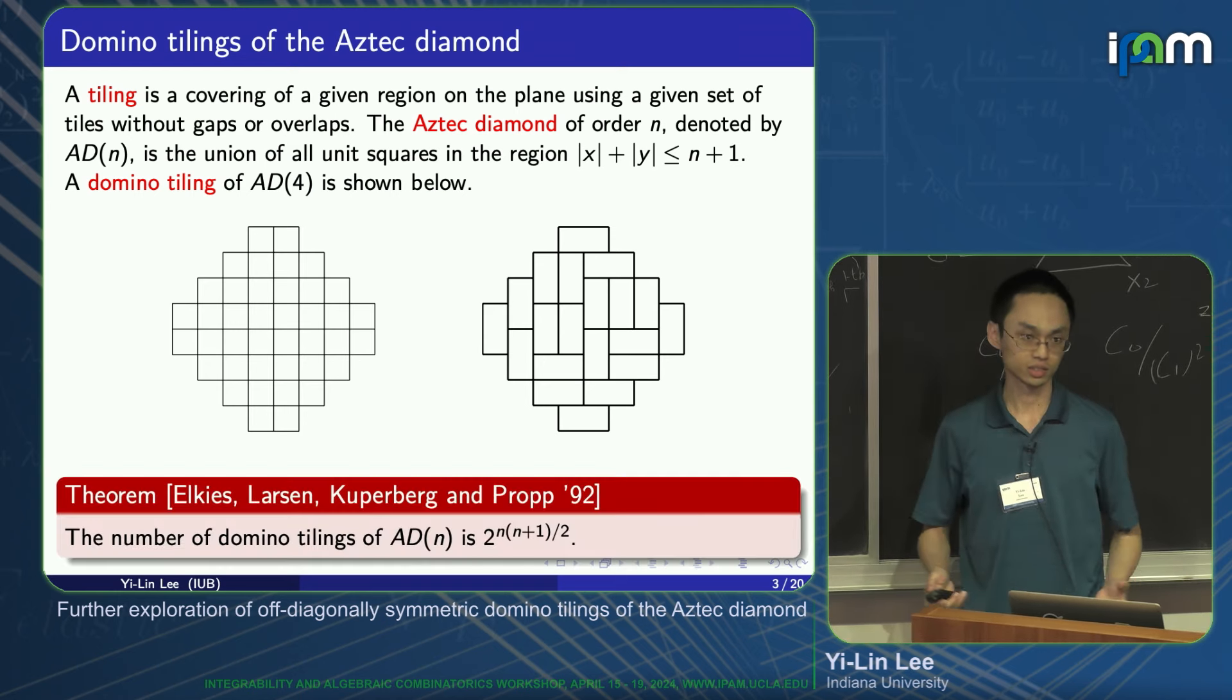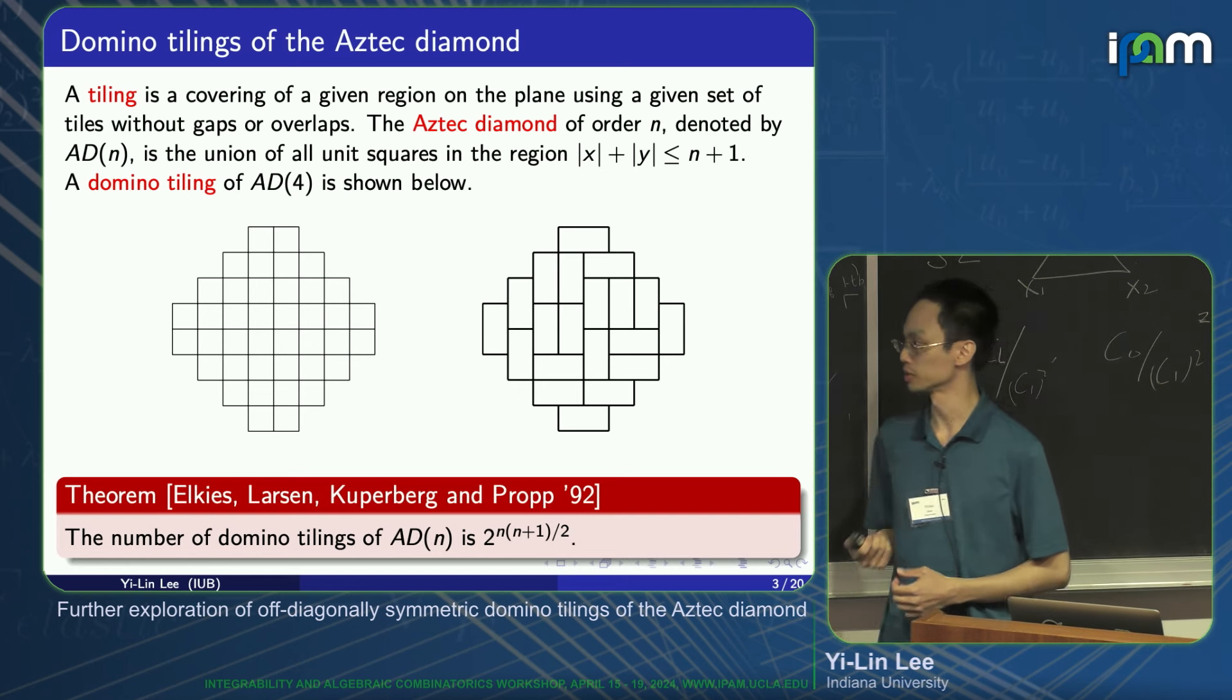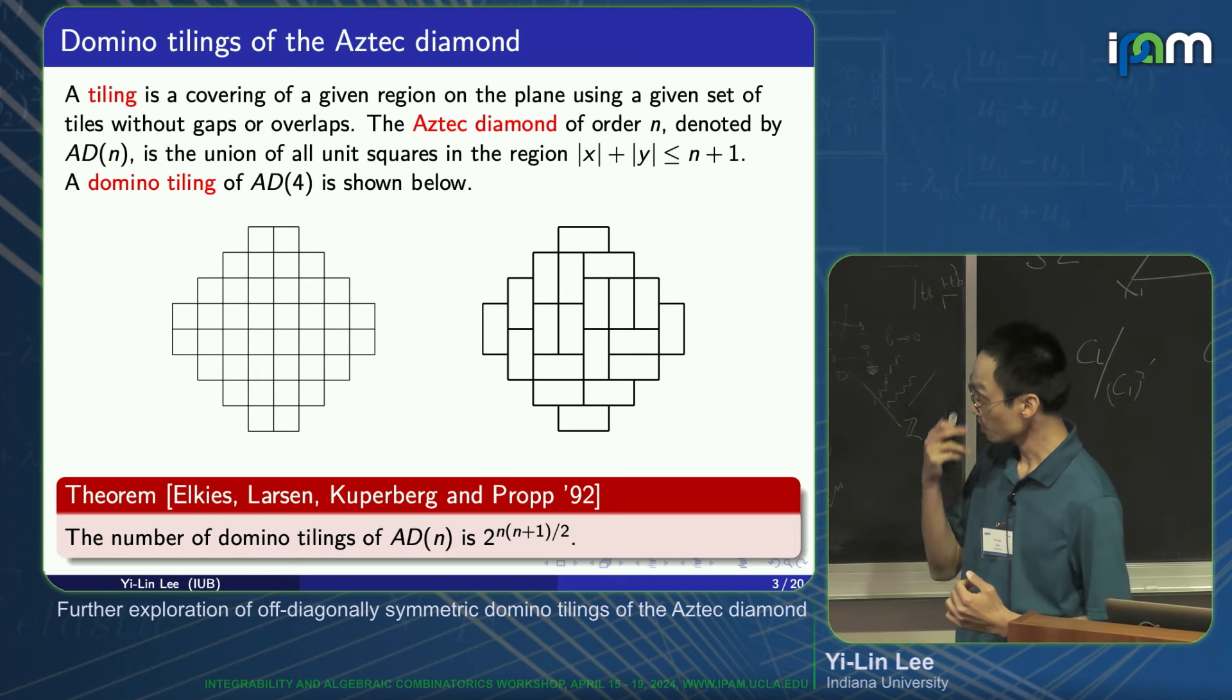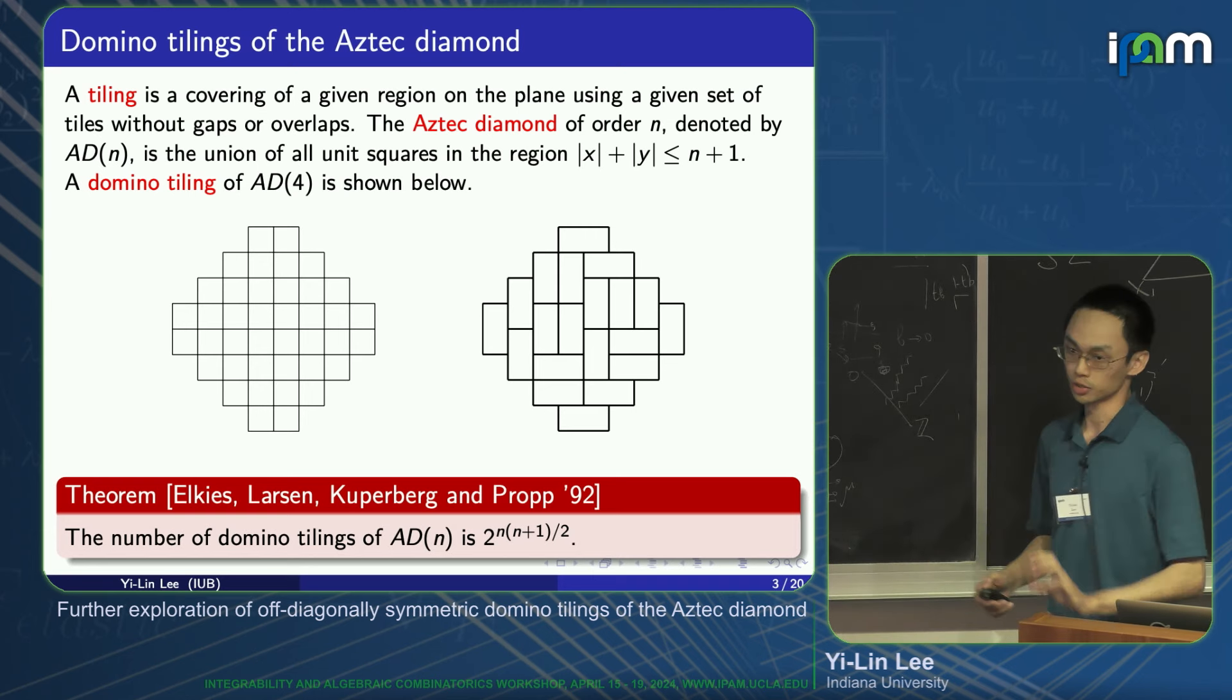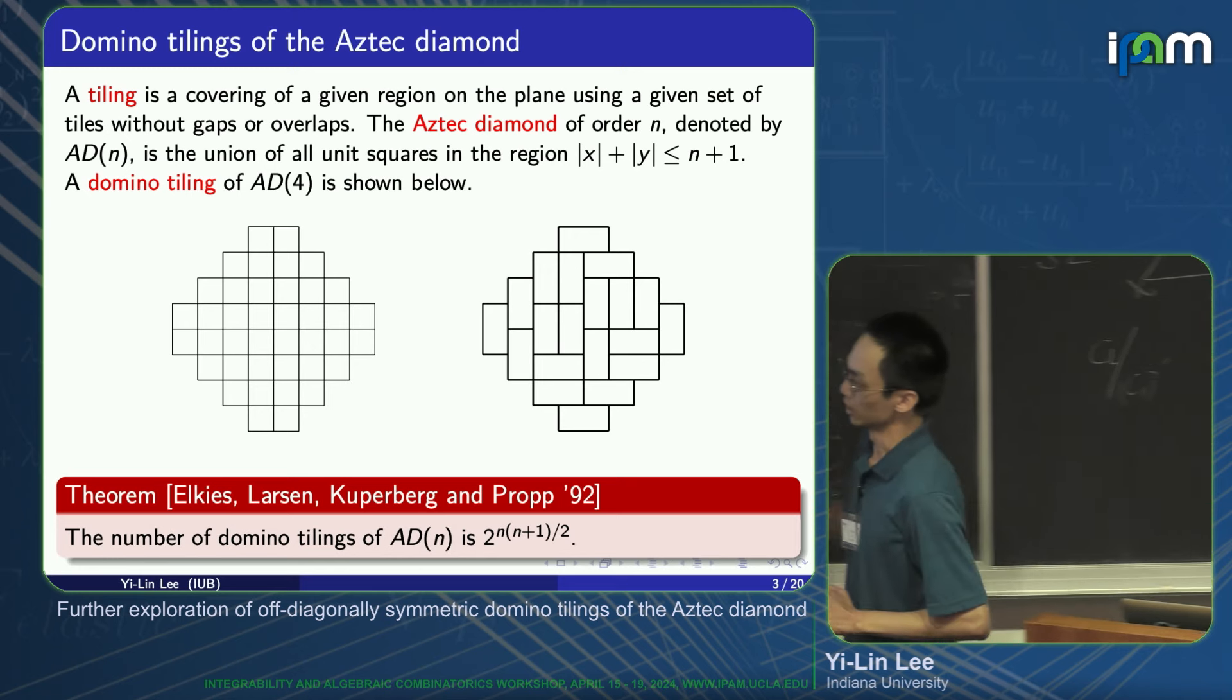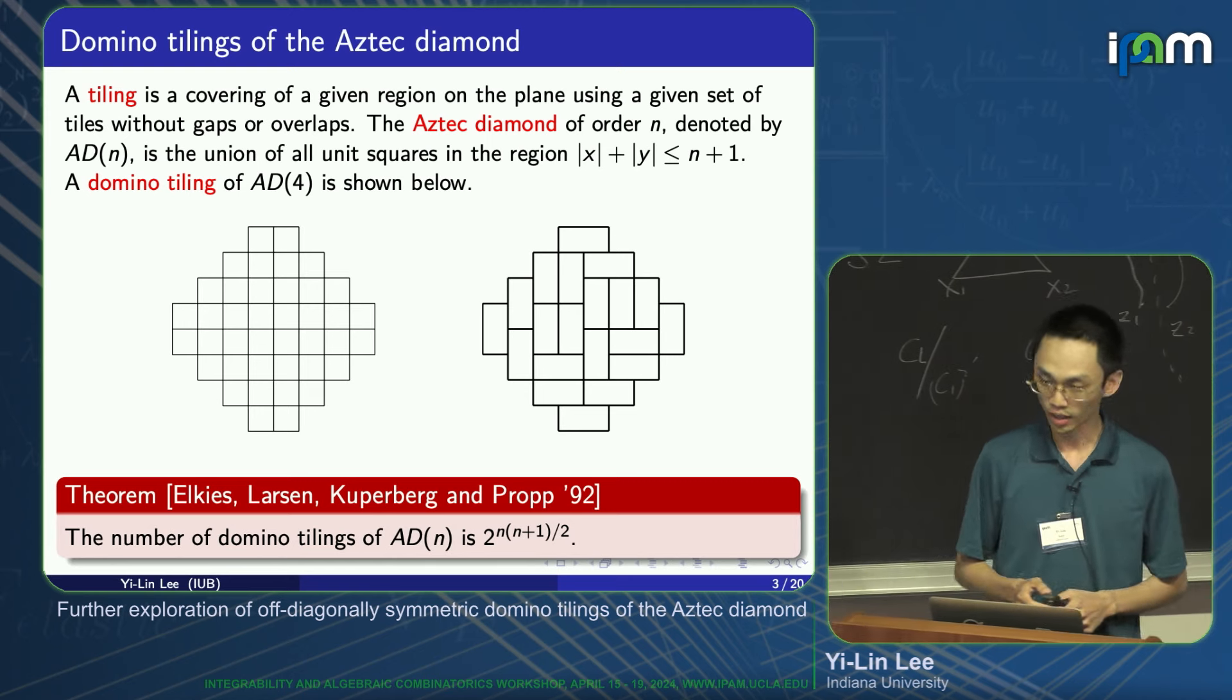One of the famous classical results by Elkies-Kuperberg-Larsen-Propp 20 years ago, also 30 years ago, is about the number of domino tilings of Aztec diamond of order n is given by 2 to the power of n times n minus 1 over 2.